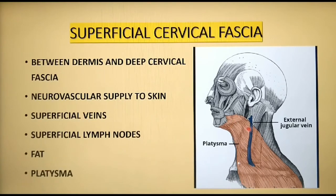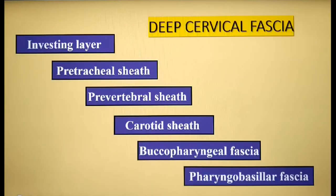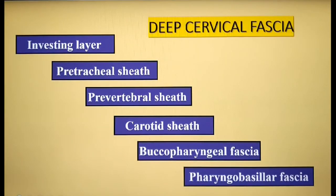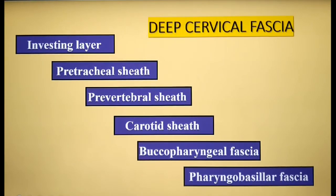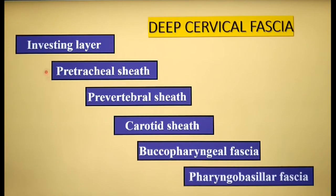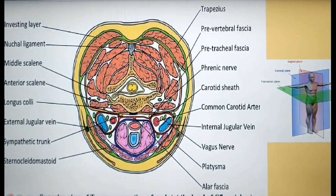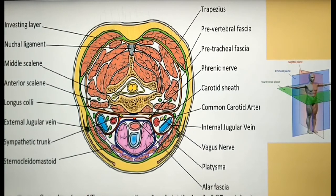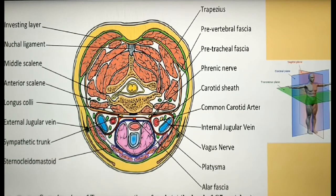Beneath the superficial cervical fascia, you find the deep cervical fascia. The deep cervical fascia, as its name suggests, lies deep to the superficial cervical fascia and the platysma muscle. This fascia is organized into several layers, and each of these layers has a role in supporting the neck structures. We shall now have a look at each of these layers in detail. The same diagram will appear in every following slide throughout this presentation because this is the best way to visualize and compare the fascial layers at a glance.